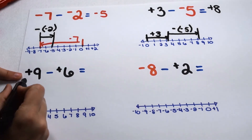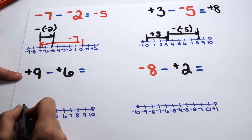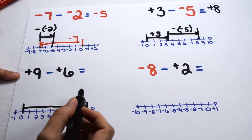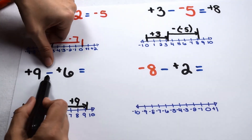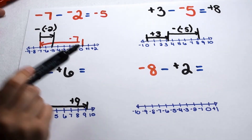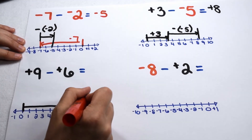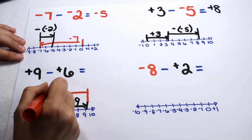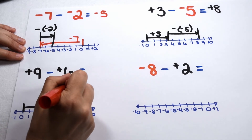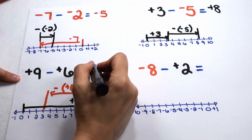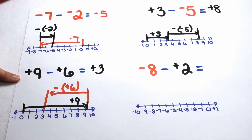Positive 9 is going to tell me that I need to go nine places to the right to start with. Now I want to take away positive 6, which means instead of going six places to the right, I'm going to want to take that back six places to the left. When I do the opposite of positive 6 and go back six places to the left, I land at positive 3. So positive 9 minus positive 6 lands me at positive 3.